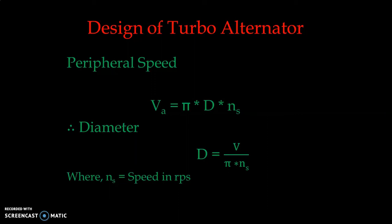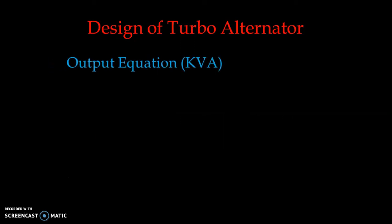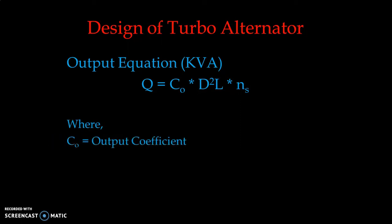Based on this diameter, if we substitute this value into the output equation, then the length of the stator core can be easily estimated. The output equation, normally in KVA, is Q = CO × D² × L × Ns. D and L are the main dimensions — D is the diameter of the stator bore and L is the length of the stator core. Ns is speed in revolutions per second, and CO is the output coefficient. CO can be expressed as 1.11 × π² × Bav × Ac × Kw × 10⁻³.